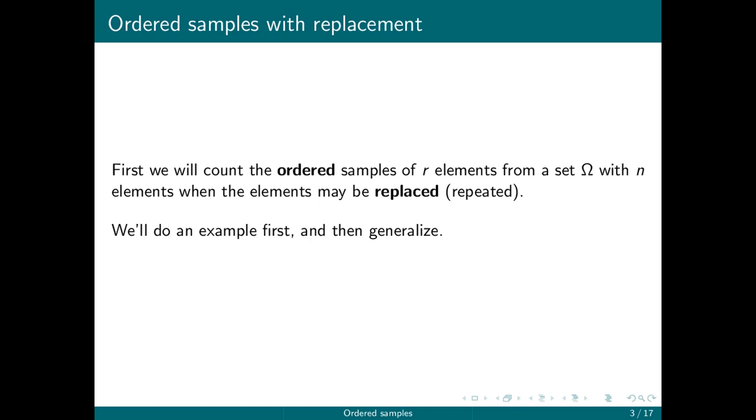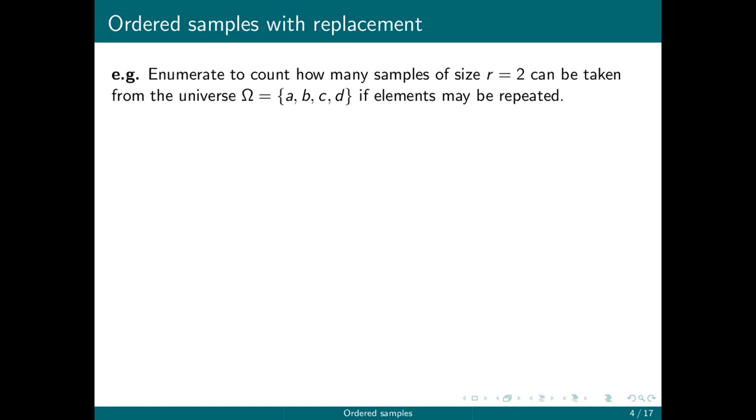First we're going to count the ordered samples of R elements from a set omega with N elements when the elements can be replaced or repeated. Rather than just write down the formula, we're going to do an example first and see if we can figure out the formula from there. We'll enumerate how many samples of size 2 can be taken from the universe A, B, C, D if we allow elements to be repeated, and we'll just write down all of those elements.